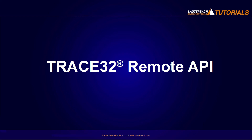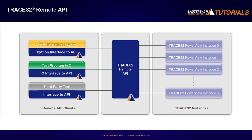This video presents the Trace32 Remote API. The Trace32 Remote API enables Lauterbach customers to control, via TCP or UDP, one or multiple Trace32 PowerView user interfaces, and access the device under test from an external program as a C application or a Python script. It does not matter whether the device under test is a physical or a virtual target or an instruction set simulator.